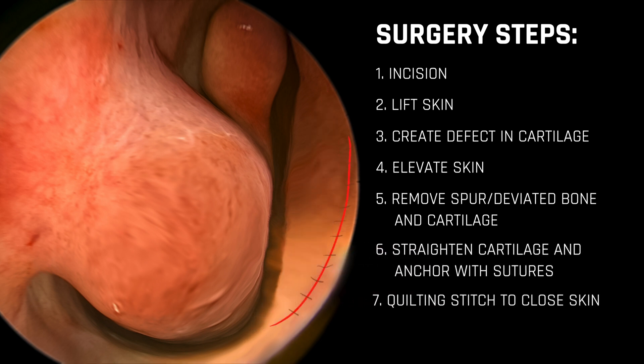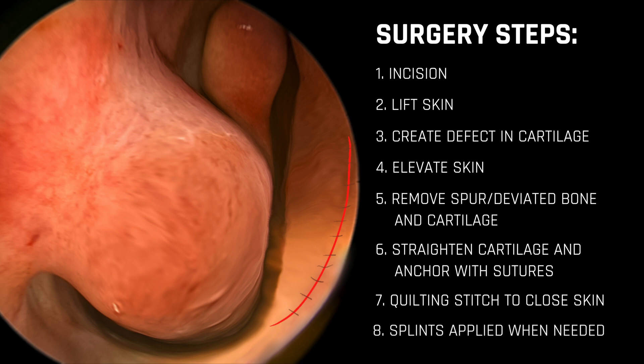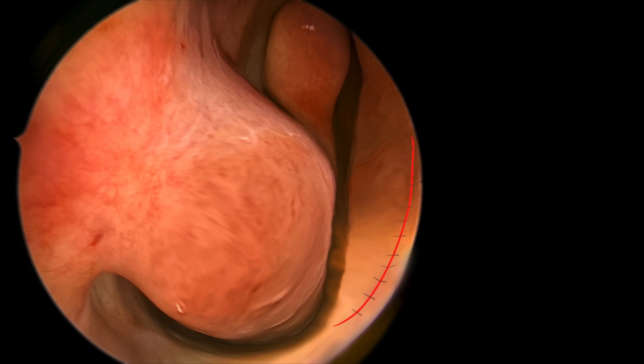In some cases, plastic splints are secured to the septum to provide added structural support while initially healing. These splints are unnecessary in many cases where the septum's natural structural support can be maintained without compromising breathing results from surgery.